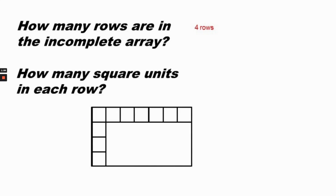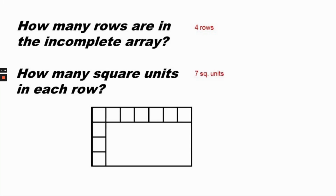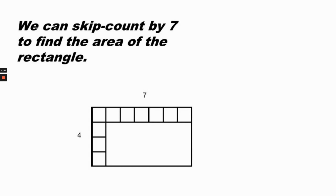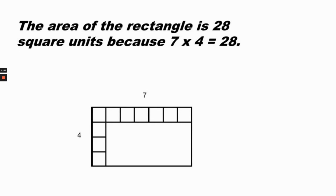How many square units are in each row? In an array the rows are equal. There are one, two, three, four, five, six, seven squares in the first row, so there are seven squares in every row. We can skip count by seven to find the area: seven, fourteen, twenty-one, twenty-eight. Four times seven is twenty-eight, so the area of the rectangle is twenty-eight square units.